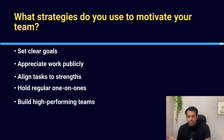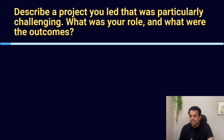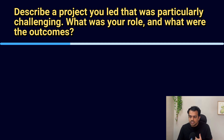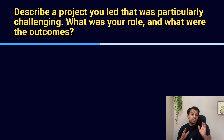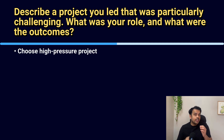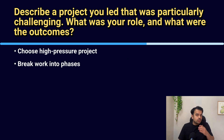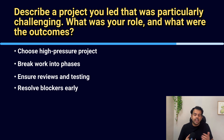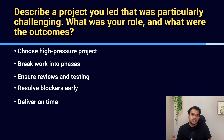Next question: describe a project you led that was particularly challenging — what was your role and what were the outcomes? Pick a project where timelines were tight or requirements were unclear. Explain that you coordinated with teams, clarified requirements, and broke tasks into multiple phases. Ensure code quality with reviews and testing, and handle blockers by discussing them early with stakeholders. The project was delivered on time and solved a real business problem. Mention how the team appreciated the clear direction.